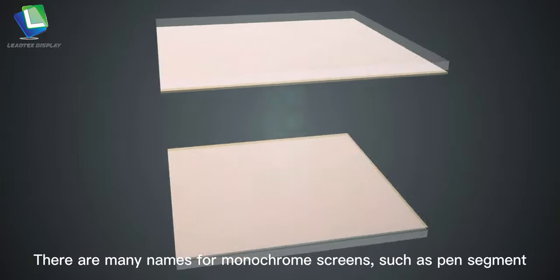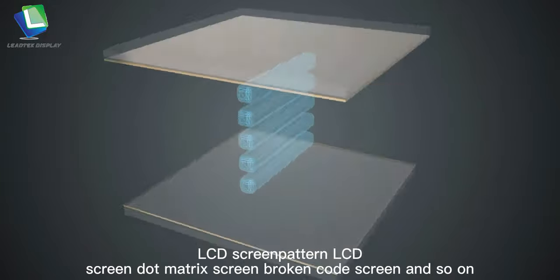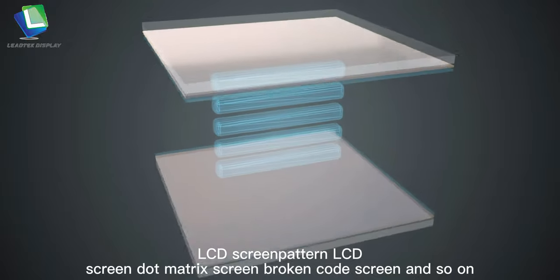There are many names for monochrome screens, such as pen segment, LCD screen, pattern LCD, dot matrix screen, broken code screen, and so on.